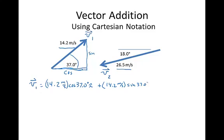That would be in the I direction plus 14.2 meters per second times the sine of 37.0 degrees in the J direction. Notice that in this one we're both plus and plus because we're in the first quadrant so we're going to the right and up.